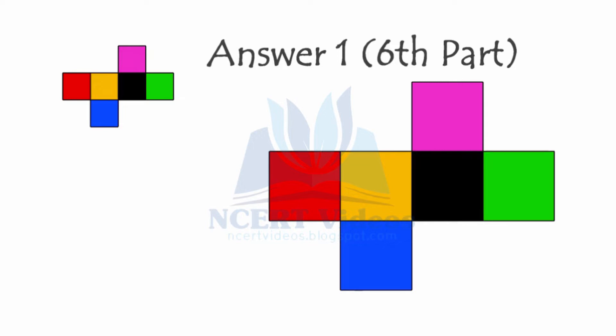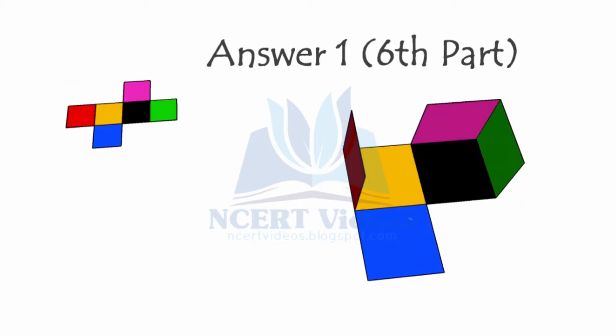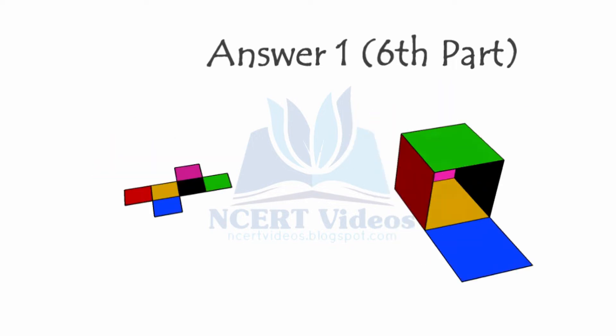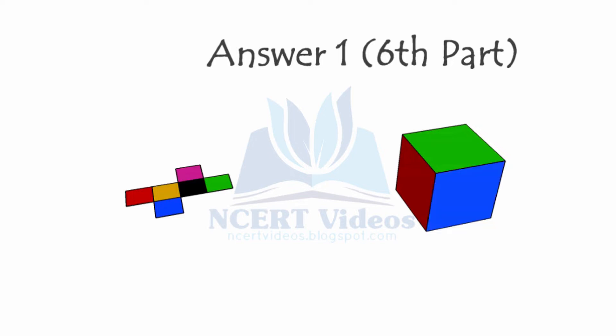Now the last part - the sixth net. First we will fold the extreme squares, leaving the blue one just to show you the construction in the simplest manner. Now we fold from the yellow and black region, and we are only left with one square - the blue one. If we fold it, we are able to construct a cube out of this sixth net. So we have seen various nets and whether they make a cube or not.